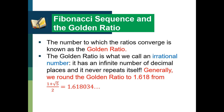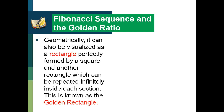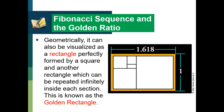Generally, we round the golden ratio to 1.618, which comes from (1 plus square root of 5) over 2, equaling 1.618034... and so on, because it's a non-terminating decimal. We use the Greek letter phi to denote the golden ratio. Geometrically, it can also be visualized as a rectangle perfectly formed by a square and another rectangle, which can be repeated infinitely inside each section. This is known as the golden rectangle, and a golden rectangle has a ratio of 1.618 to 1.